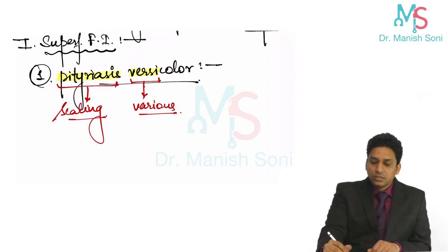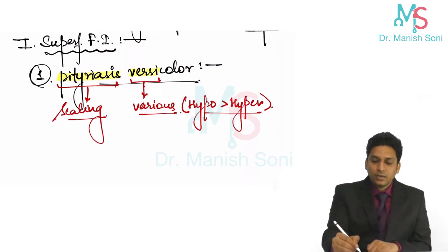In this condition, generally the lesions are hypopigmented, but sometimes lesions can be hyperpigmented. That is why we use this term versicolor, meaning different color. Now, let us discuss the details.